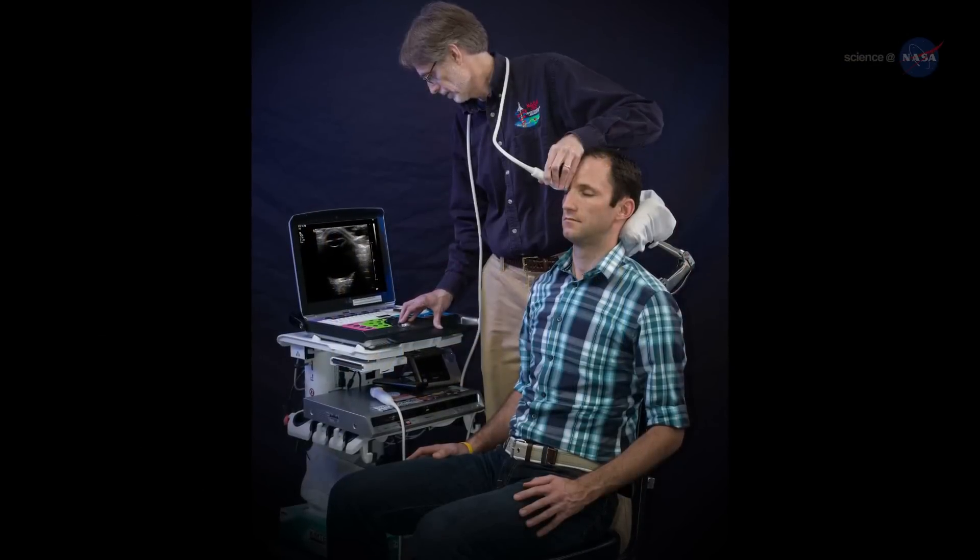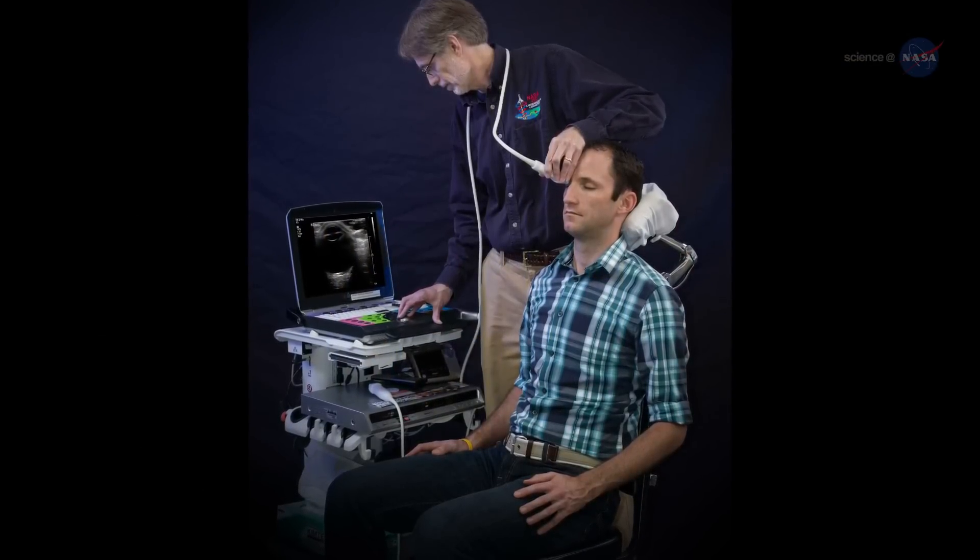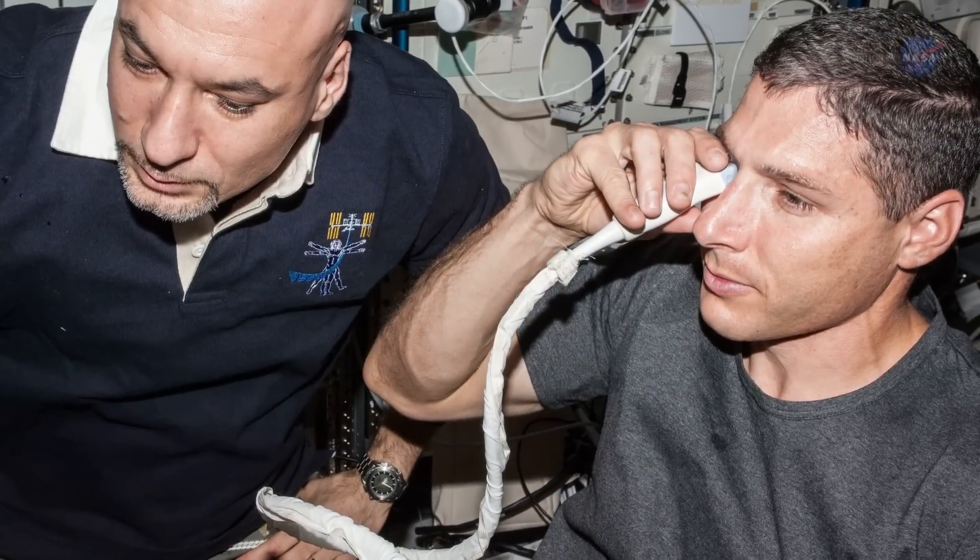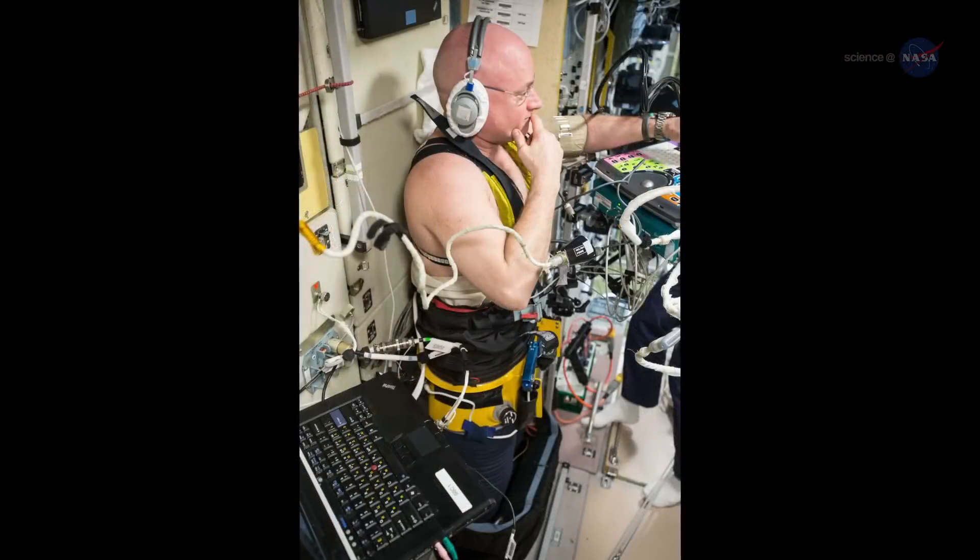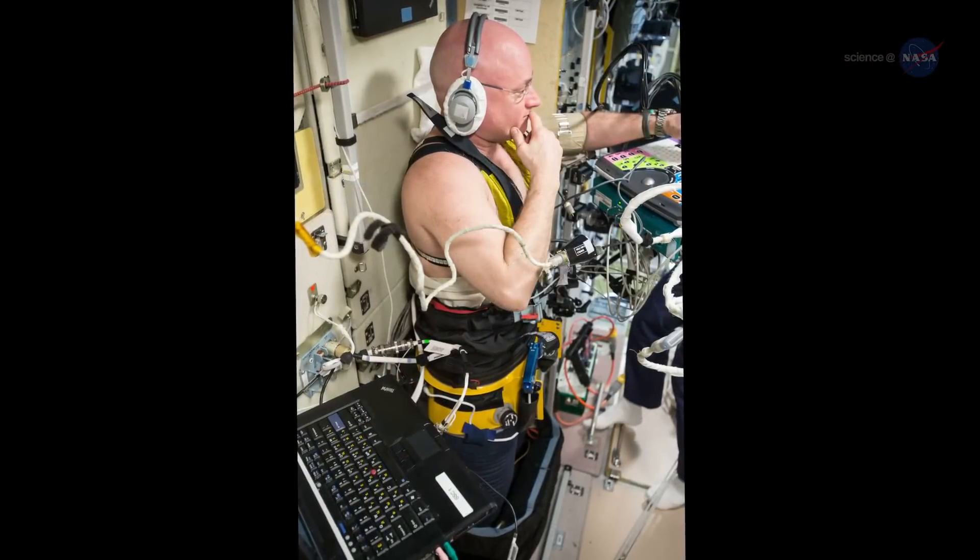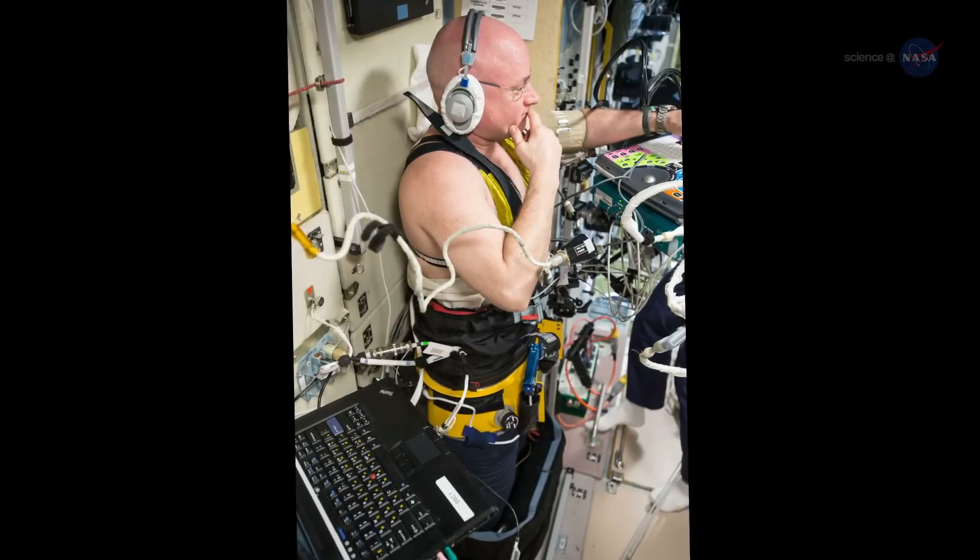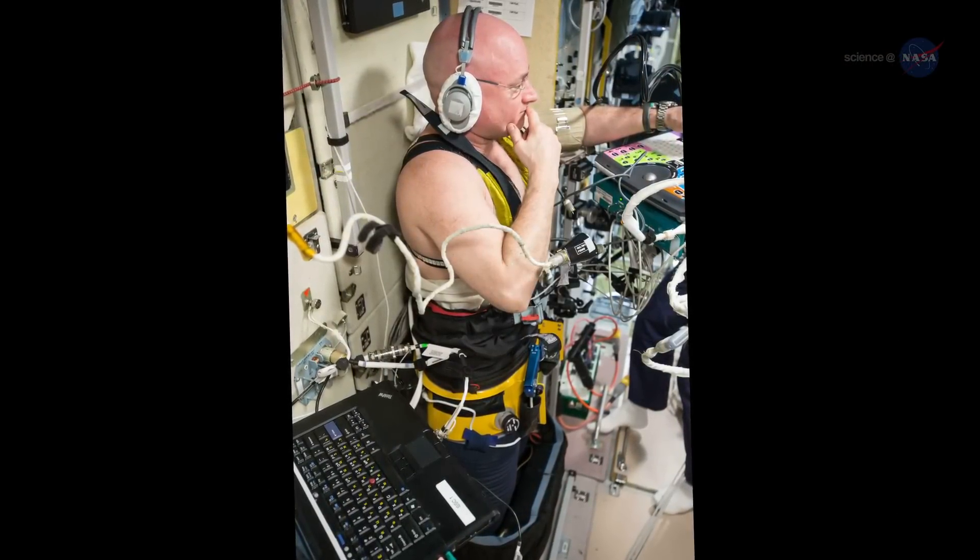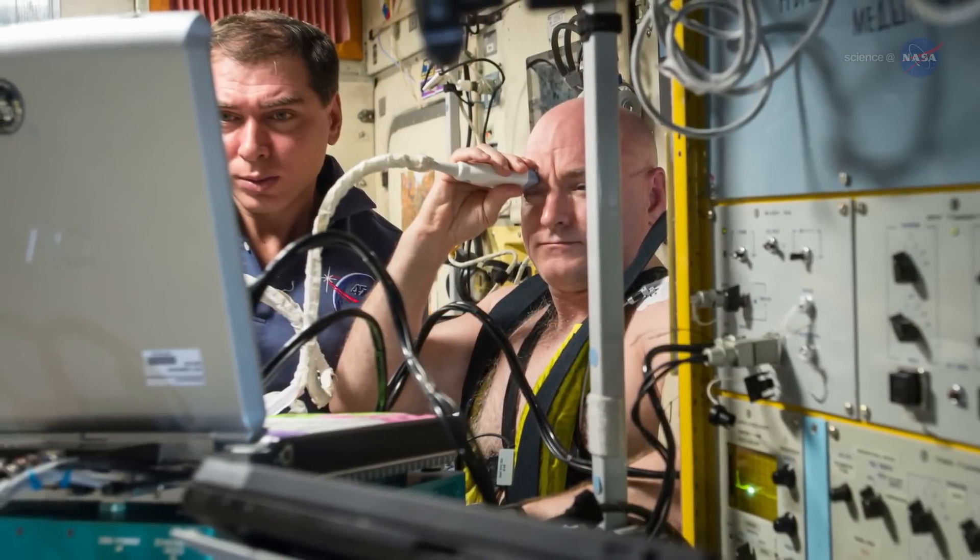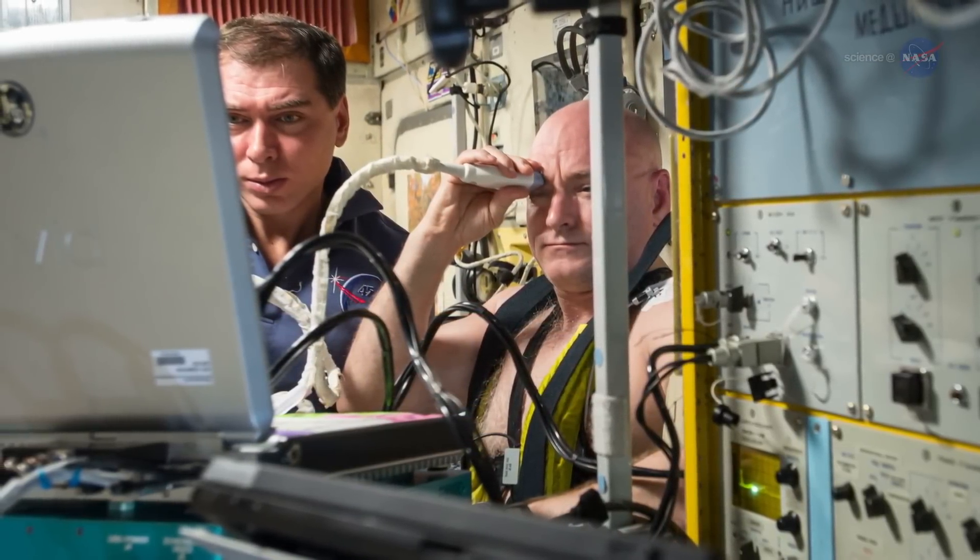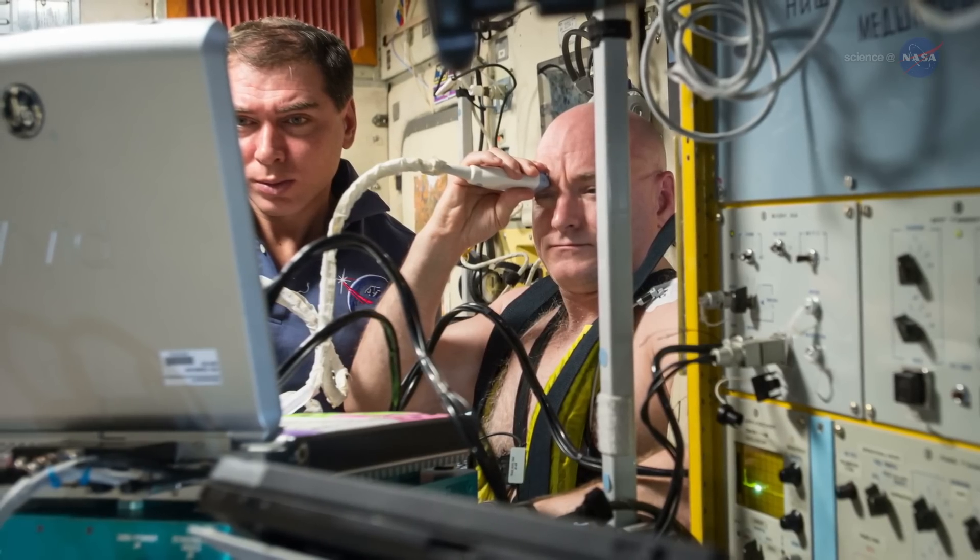The researchers will take cardio, cerebrovascular, and ocular measurements on the test subjects before enduring 25 millimeters of mercury of vacuum in the Chibis. If it turns out that lower body negative pressure helps reverse fluid shifts and prevent the visual symptoms, it may indicate that crew members should use the Chibis earlier and more often on long missions. We've seen some promising results in our first subjects.